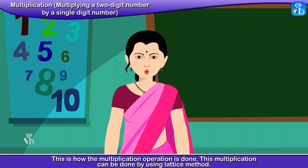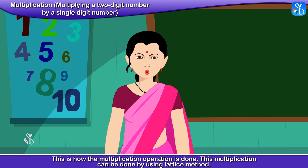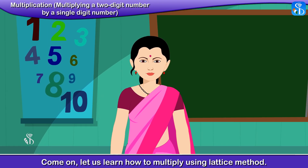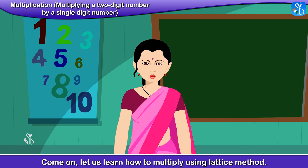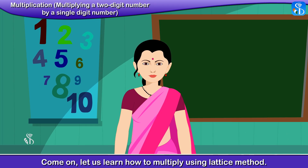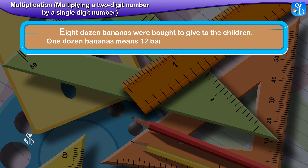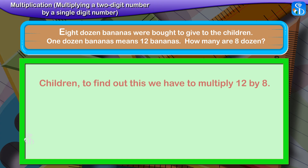Multiplication can also be done using the lattice method. Let us learn how to multiply using the lattice method. Example: Eight dozen bananas were bought to give to the children. One dozen bananas means 12. How many are 8 dozen? To find out this, we have to multiply 12 by 8.